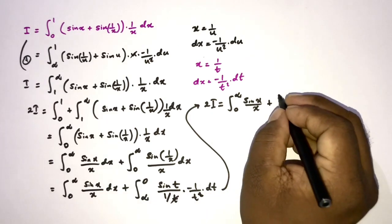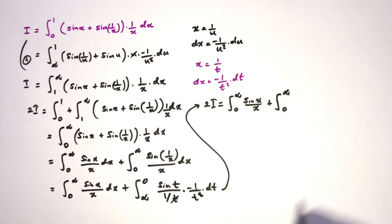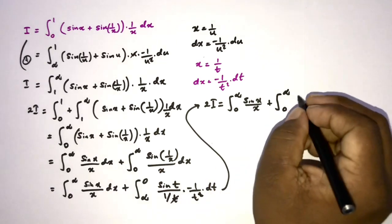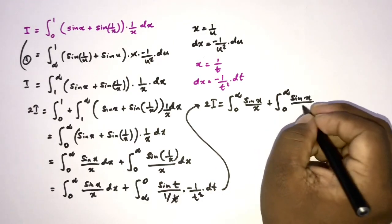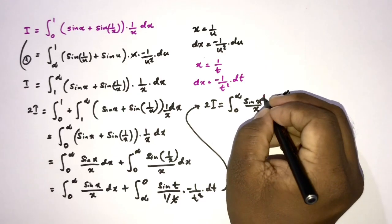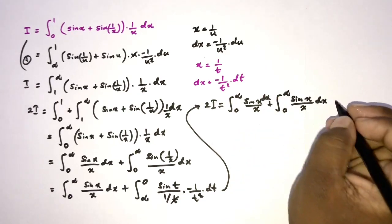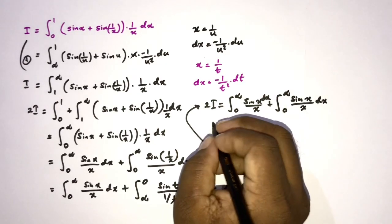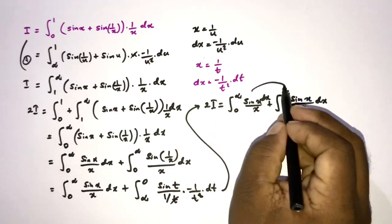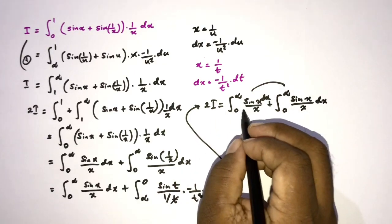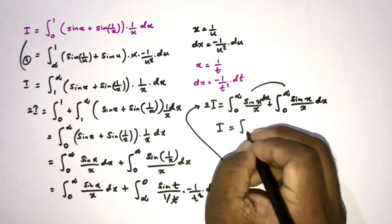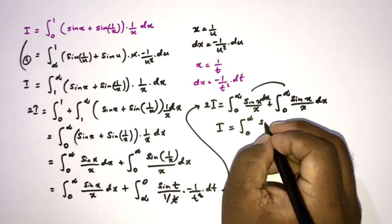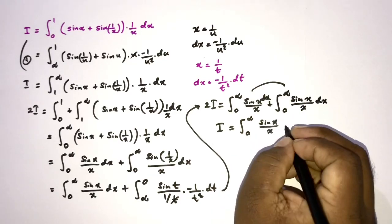After substitution we have 2I equal to the integral from 0 to infinity of sin(x)/x dx plus the integral from 0 to infinity of sin(t)/t dt, which is the same integrand. Since definite integrals are independent of the variable name, we write both as sin(x)/x dx. These are the same integral, so 2I equals 2 times that integral. The factor of 2 cancels, giving I = the integral from 0 to infinity of sin(x)/x dx.